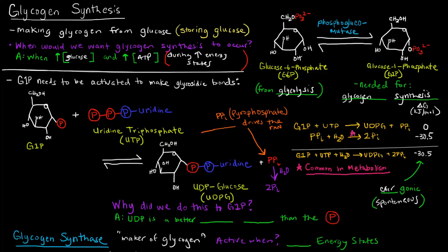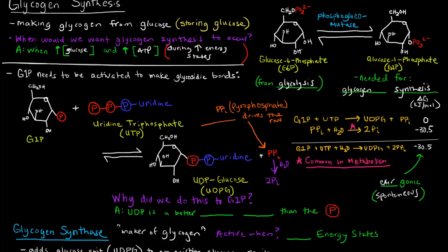Now, I put a pink star here over the hydrolysis of this pyrophosphate. And the reason why is because it's very common in metabolic processes for a pyrophosphate hydrolysis to power or drive a particular reaction. So I wanted to give you guys a heads up for that. But why do we do this? Why wouldn't we just add this G1P to a glycogen chain?